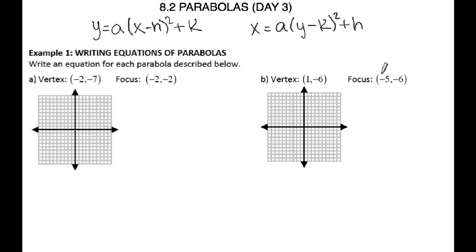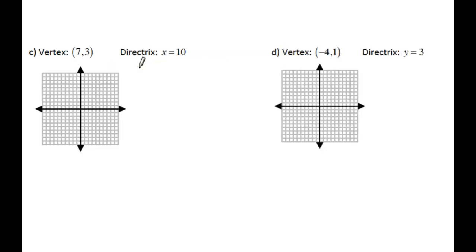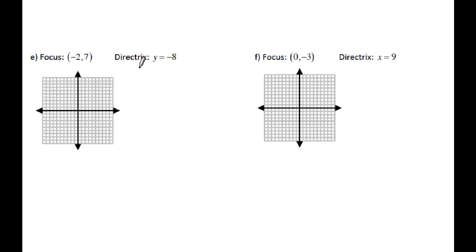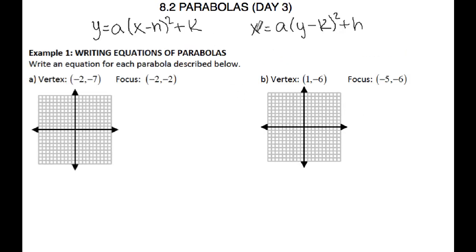For day 3, I'm going to give you two pieces of information regarding the parabola, and from there you're going to put it in one of the two standard form equations. The two pieces of information I'll give you are the vertex and the focus, the vertex and the directrix, or the focus and the directrix. You need to know the vertex (h, k) and the value of a to write the equation in standard form.